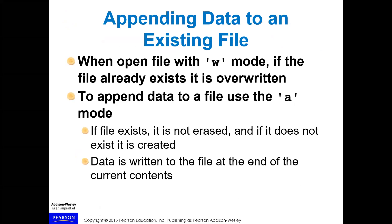Appending data to an existing file — whenever you want to create a log file, for example, you open files with the append flag instead of the write flag. When you open a file with W mode and the file already exists, it is overwritten. To append data to a file, you use the A mode, which stands for append. If the file exists it is not erased; if it does not exist it is created, and data is written at the end of the current contents.